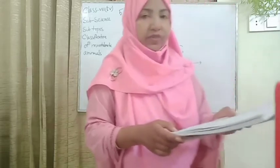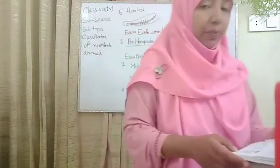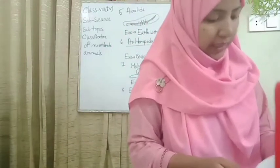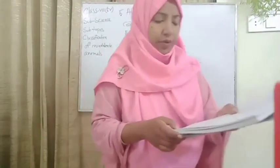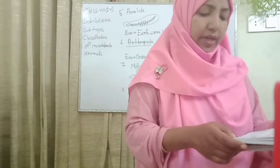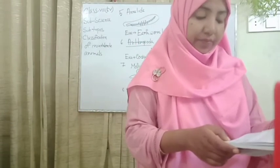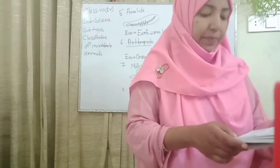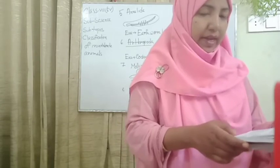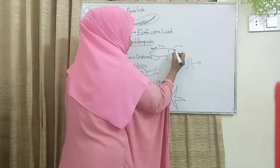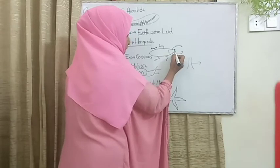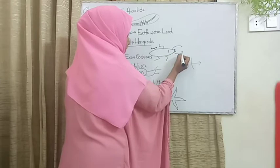Many species of this phylum can fly with the help of wings. General characteristics: the body is segmented and jointed appendages are present. The head bears a pair of compound eyes and antennae.